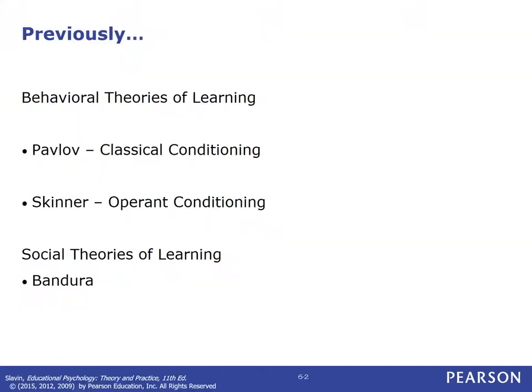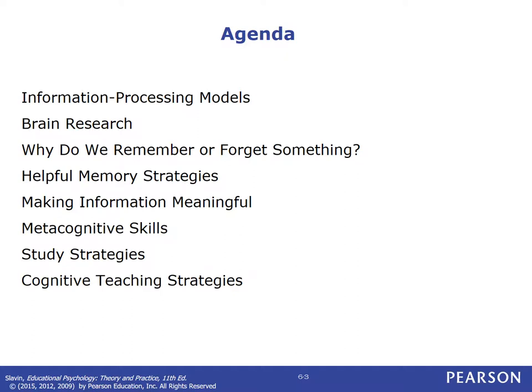You'll recall from previous weeks we've been talking about behavioral theories of learning — Pavlov who did classical conditioning, Skinner who did operant conditioning, and last week we talked about Albert Bandura who came up with the social theory of learning. Tonight we're going to switch gears and talk about information processing models, brain research, why we remember or forget things, helpful memory strategies, and some different cognitive teaching strategies.